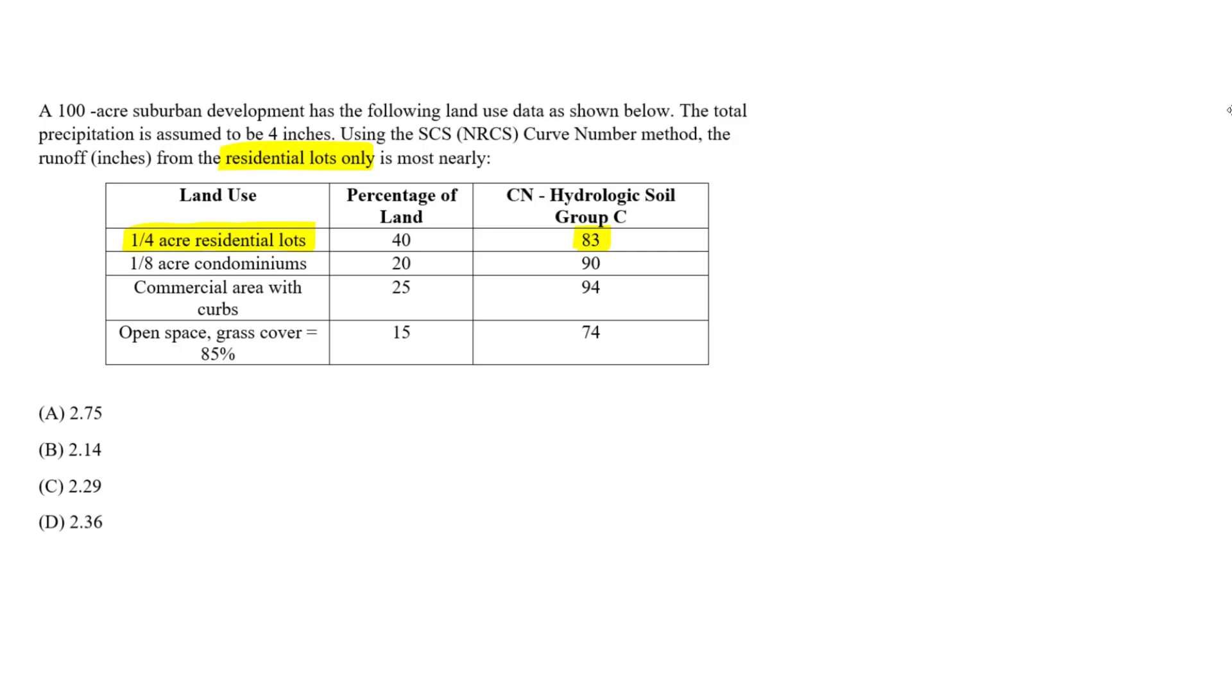Because once again, we're told to determine just for residential lots. So what's actually happening here, if I draw a picture, let's say this is our total acreage. So let's say we have that, this is the 100 acres here. And we're going to say about 40% of this is going to be for residential lots. So let's say about 40% here is residential, and it's going to be around, so 40% of 100 is 40 acres as stated.